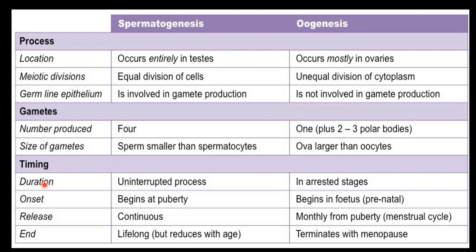Regarding duration: in spermatogenesis, production starts at puberty from spermatogonia to spermatozoa — the process is uninterrupted and continuous. In oogenesis, it is in arrested stages because no oogonia are produced or added after birth. The oogonia develop in stages and are arrested at the first meiotic division and second meiotic division; only at fertilization does the process continue. So it is arrested at certain stages.